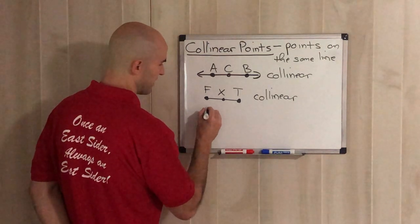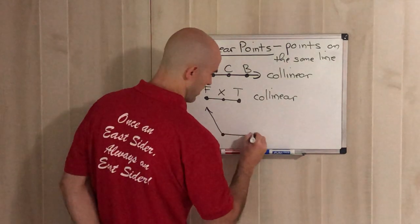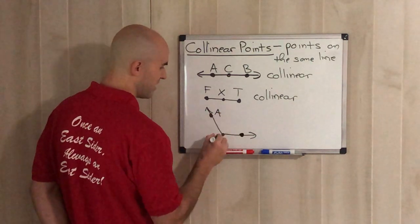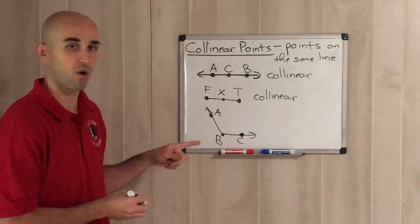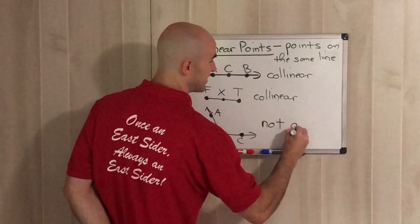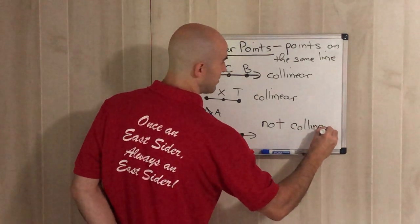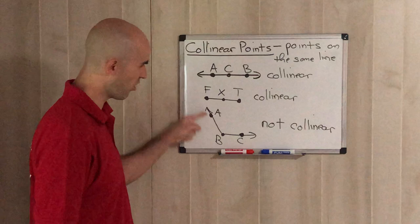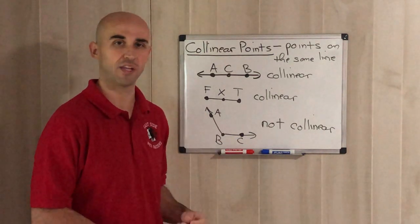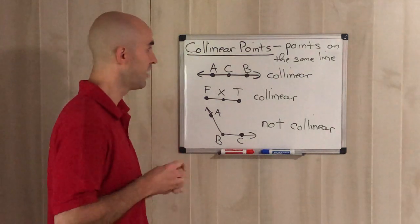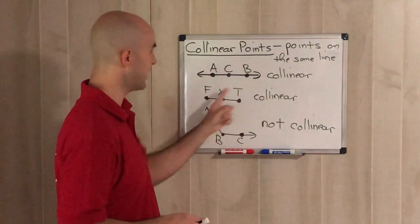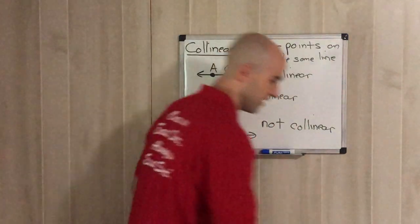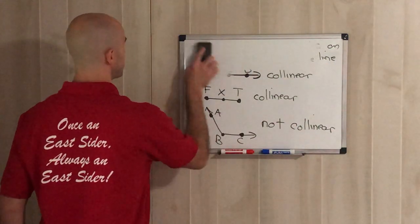What something that's not collinear looks like: if three points are not all on the same straight line — if they're arranged so there's no single straight edge passing through all of them — then those three points are not collinear. For it to be collinear, all the points have to be on the same straight edge. If they're all on the same straight edge, it's collinear. If not, it's not collinear.